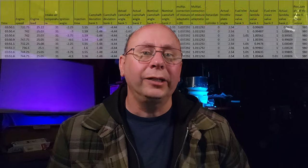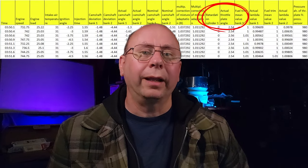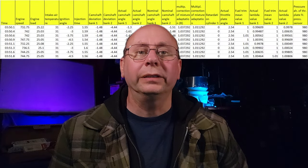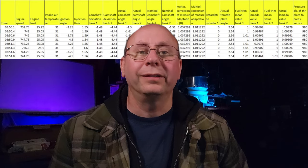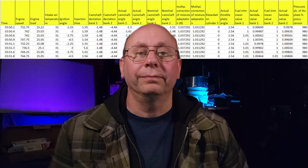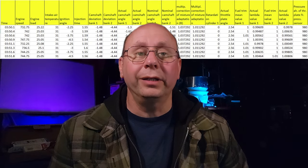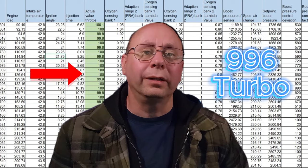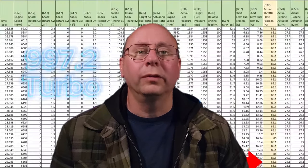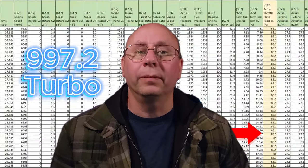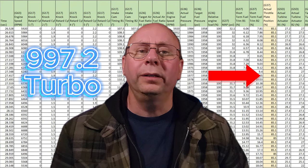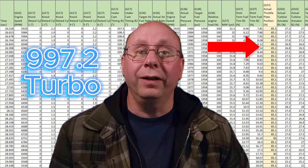The actual throttle plate angle is the next column over, and is pretty much exactly what it says — no hidden agenda. On some cars 100% is 100%, while on others 100% or max throttle angle may be limited to 85%.